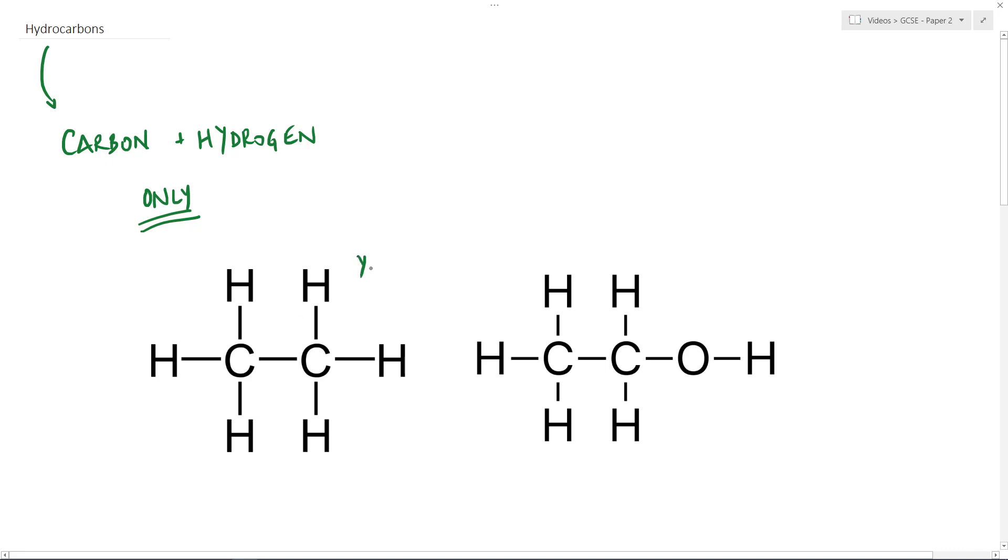So here's my ethane, here's my ethanol. This is a hydrocarbon. This is not a hydrocarbon. It's a key difference there. Although this molecule, the ethanol, does contain hydrogen and carbon, it also contains an oxygen which means it is not a hydrocarbon because a hydrocarbon, such as this one, ethane, only contains carbon and hydrogen. And that's a very, very important point.